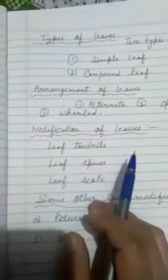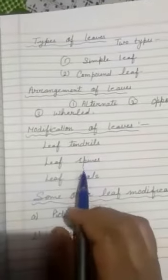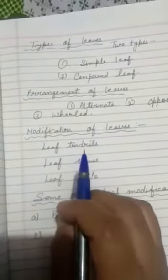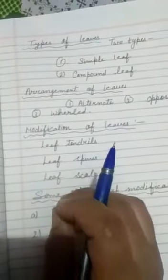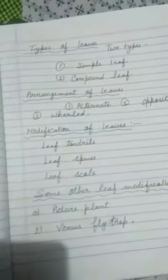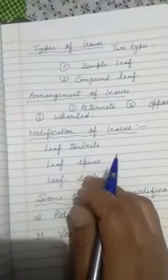The next part is leaf spines. Some desert plants show leaf modification in the form of spines. Leaves are reduced in size and they become pointed and spiny. These structures are known as spines.